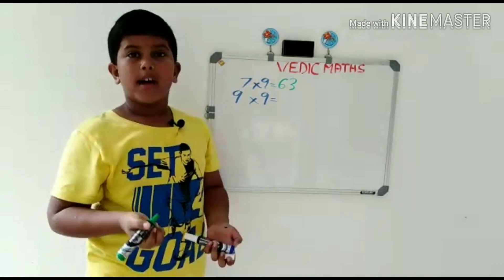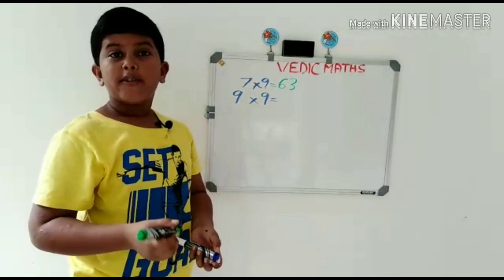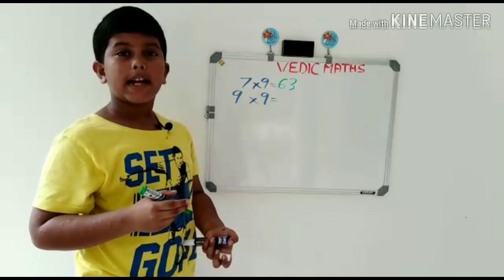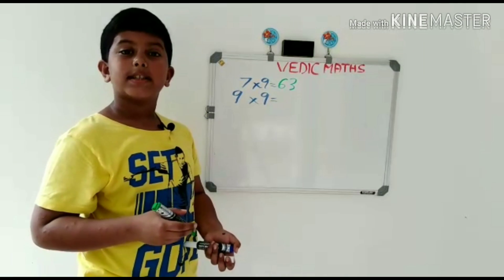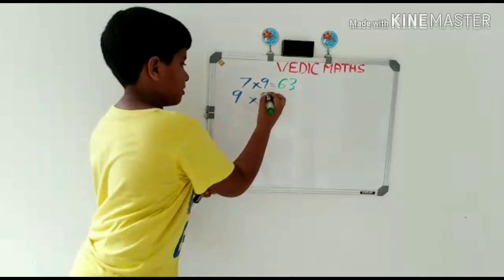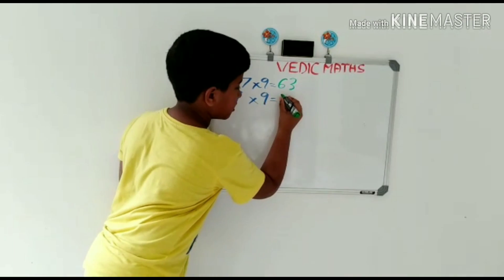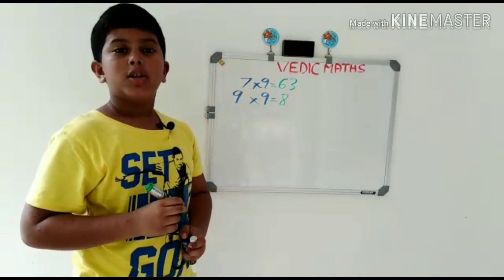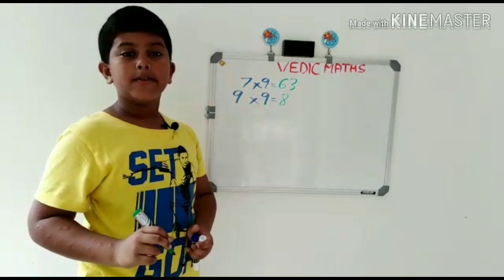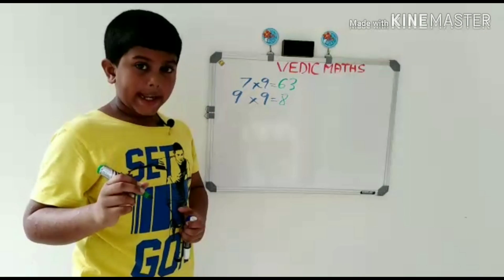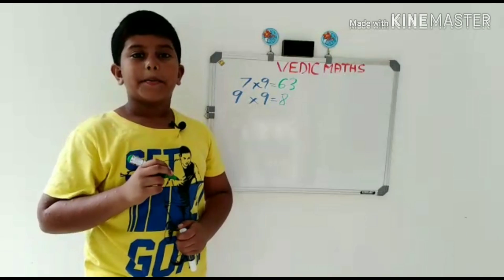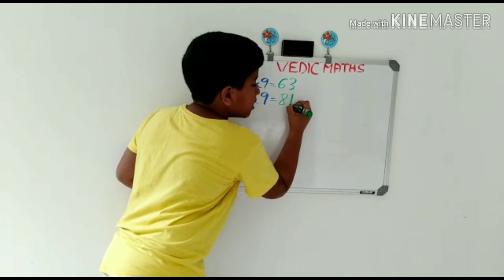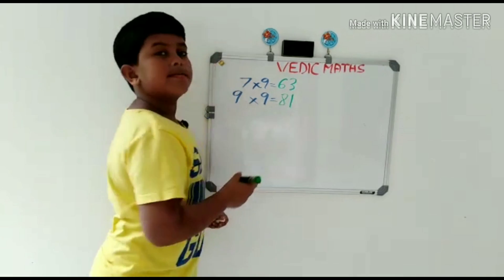9 × 9. First, we should write the number 1 less than 9, that is 8. And what number should be added to 8 to get the number 9? That's 1. So the answer is 81.